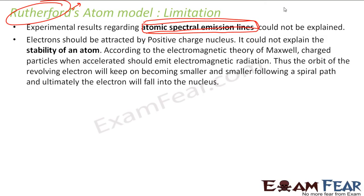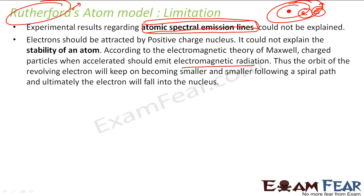Also, he told that we have something called a nucleus with positive charge, and we have electrons revolving around it. Now the question was, how can the atom be stable? Since the electron has a charge and when it revolves around, there is acceleration due to change in direction. According to Maxwell, any charged particle when accelerated emits electromagnetic radiation or electromagnetic waves.